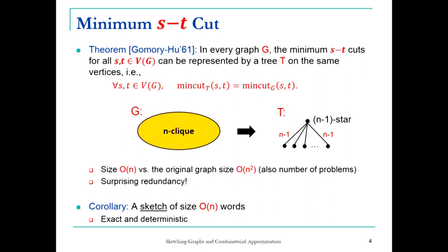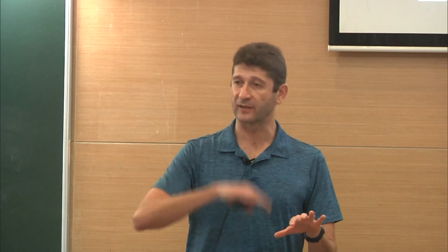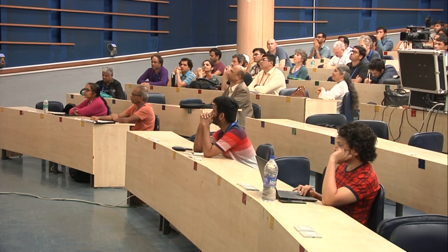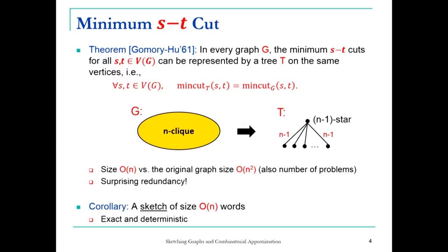You have n-choose-2 different questions: compute the minimum ST cut for every possible combination of S and T. You can actually summarize all these n-choose-2 cuts by a tree — you can replace the graph G with a tree T. This tree is going to have exactly the same vertex set V but will have the same cuts. The minimum cut in the tree T is going to be equal to the minimum cut in the graph G for every pair of vertices.